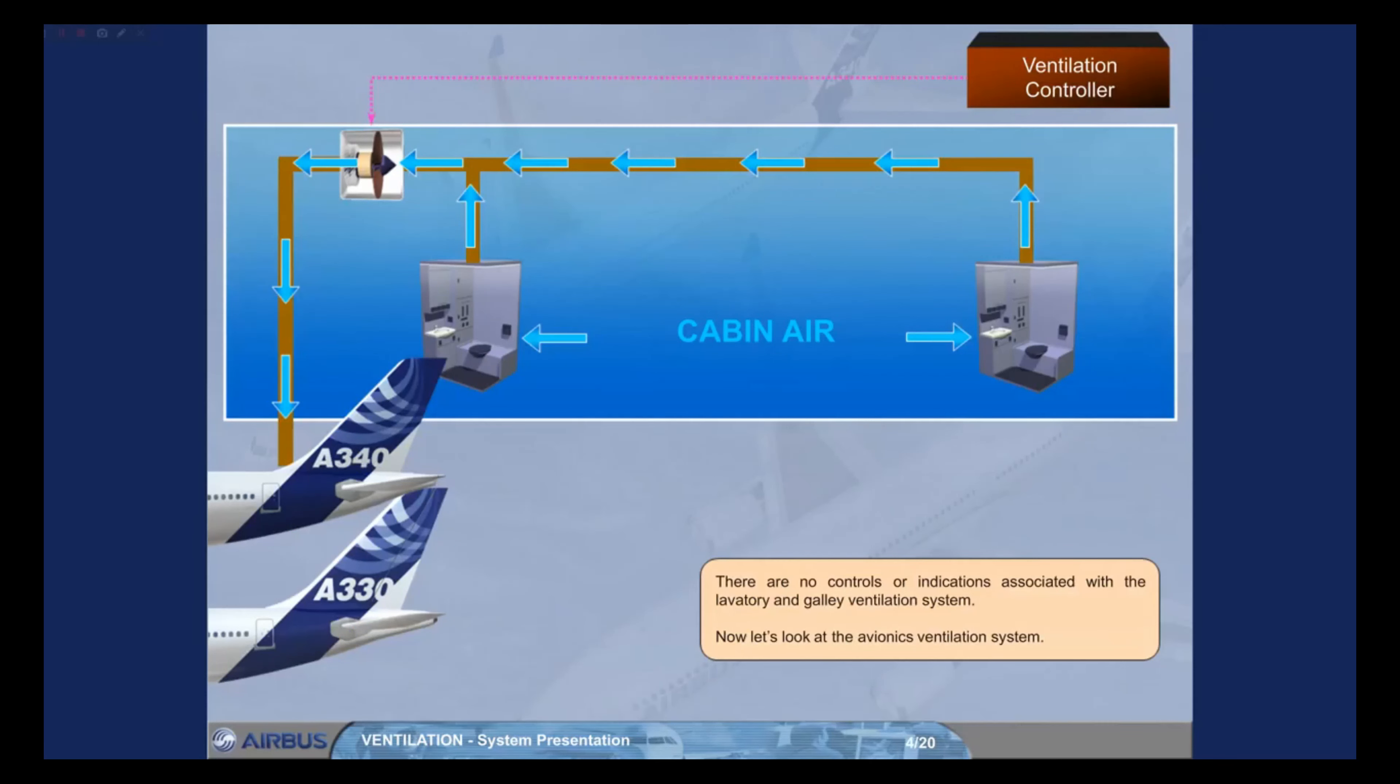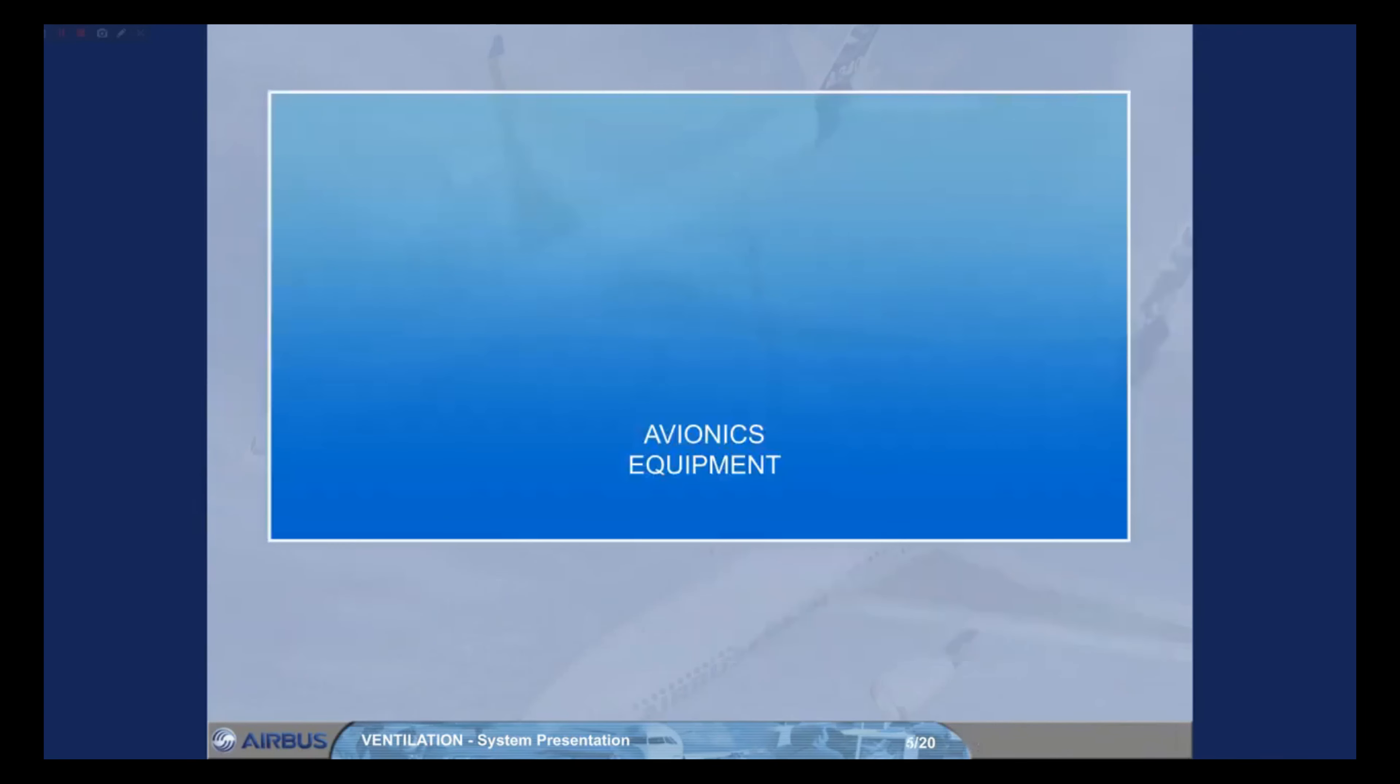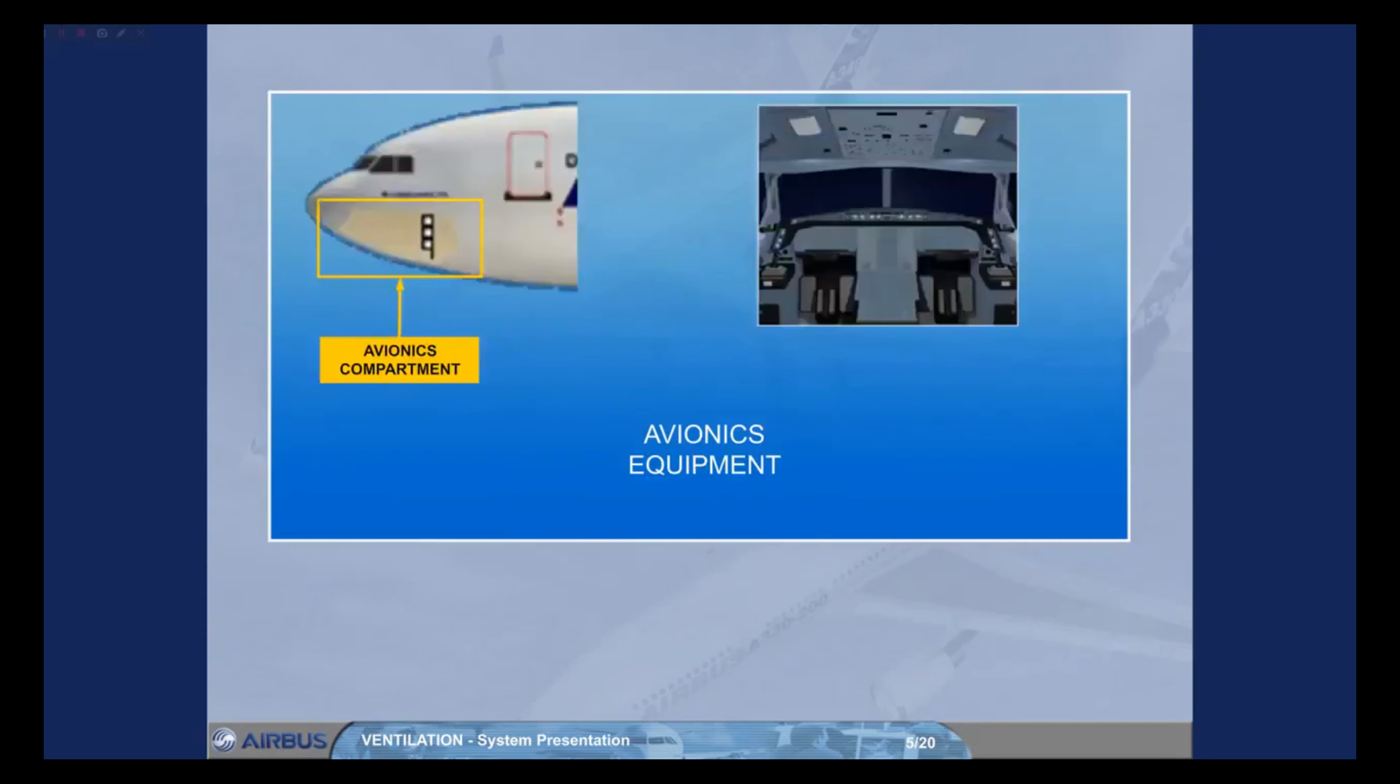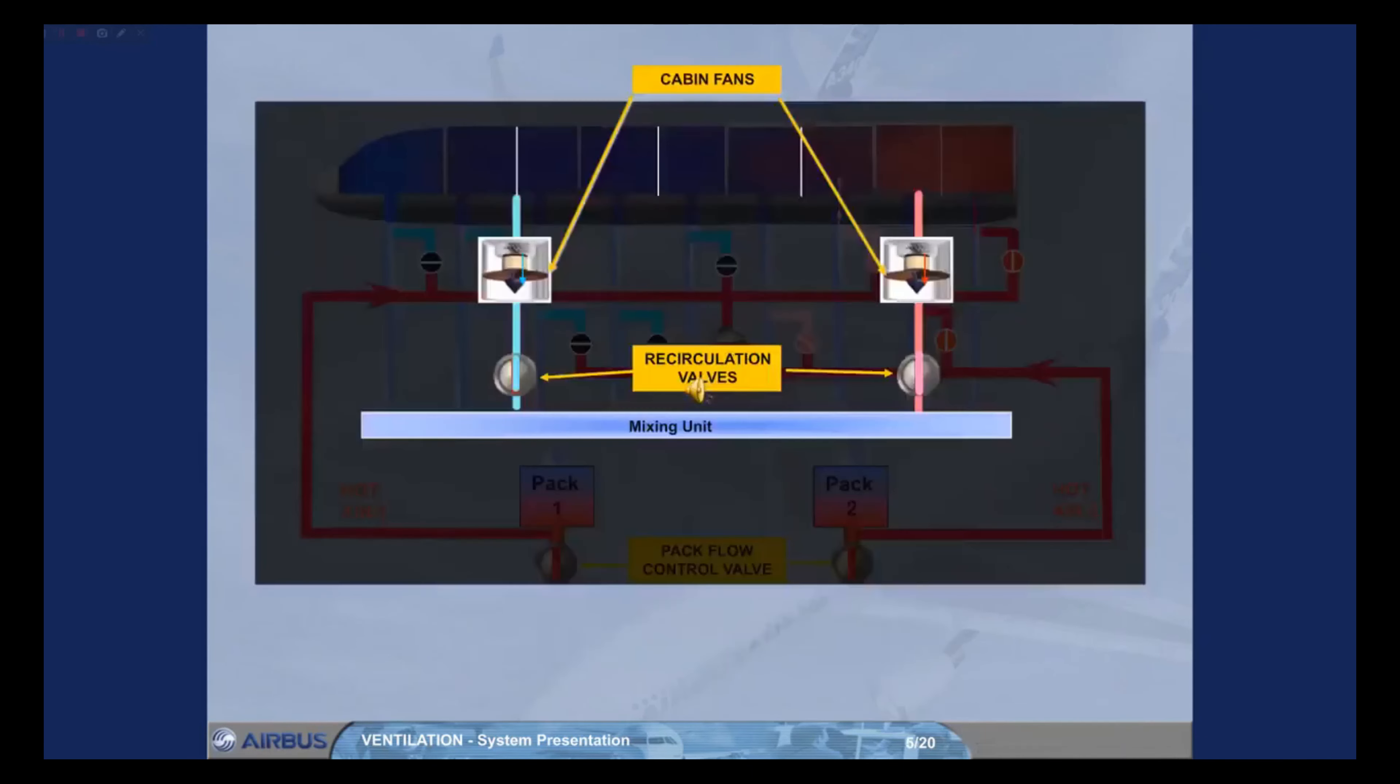Now let's look at the avionics ventilation system. The avionics ventilation system provides cooling air for the avionics compartment and the flight deck instruments. Two cabin fans, which blow air to the mixing unit of the air conditioning system, are also used for the avionics system.